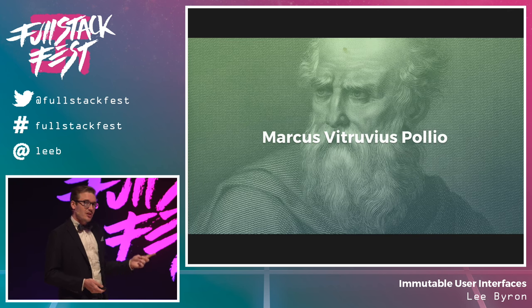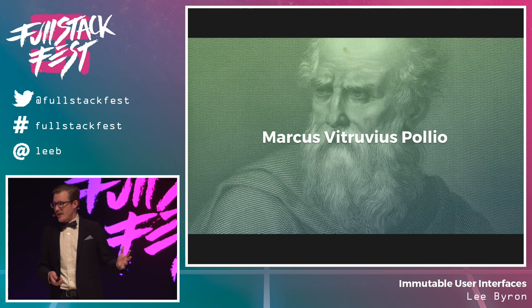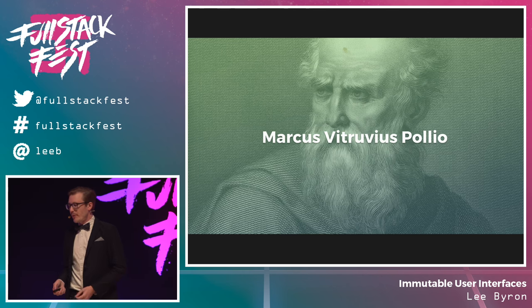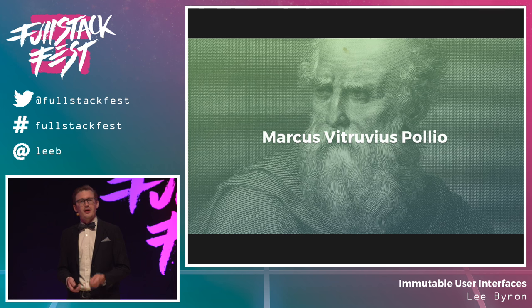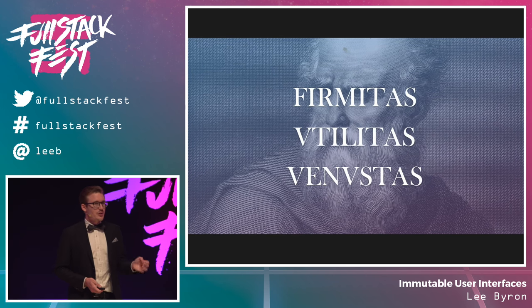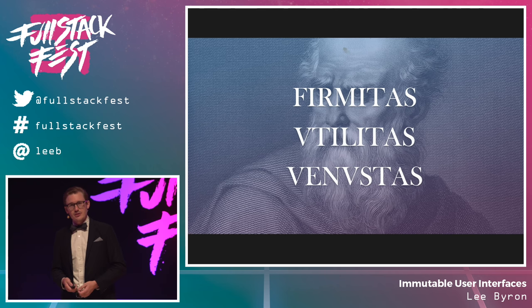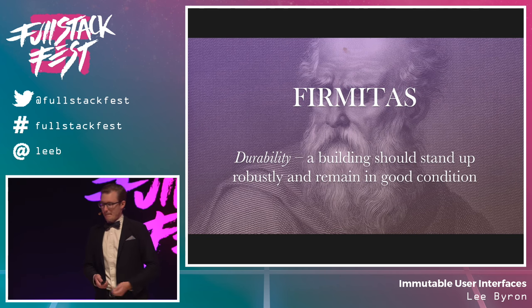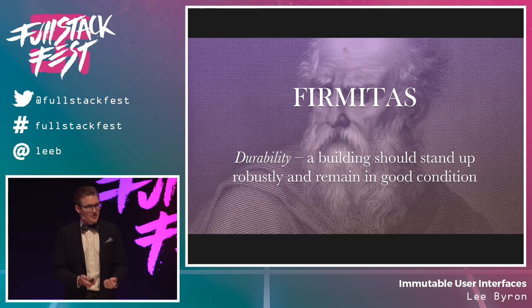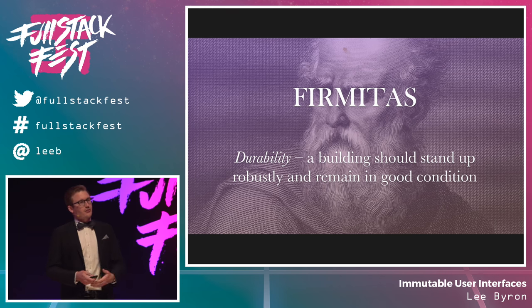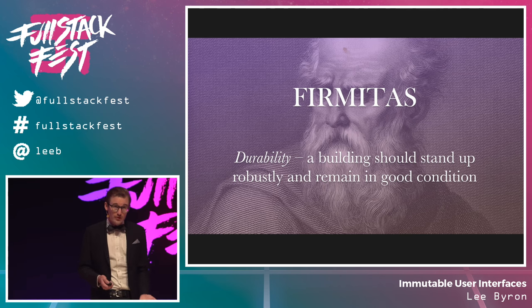This is Vitruvius — a Roman scholar and architect who, 2,000 years ago, wrote about the principles for satisfying good architecture: Firmitas, Utilitas, and Venustas. Firmitas means durability — a building should be robust and have longevity. When we build apps, we look for the architectural choices that help us reduce bugs and improve performance.